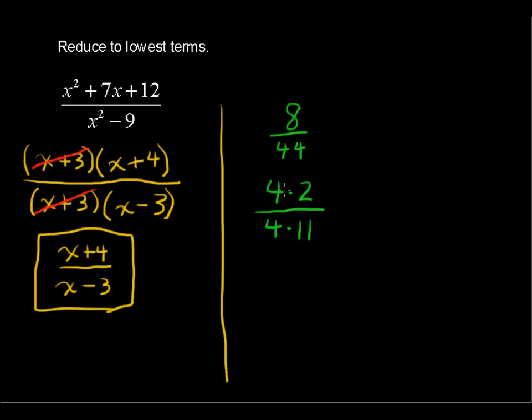So when you have things multiplied in the numerator and the denominator, now you can cancel out these factors. Factors are things that you are multiplying with something else. Cancel out the 4 out of the numerator and the denominator, and what you have left is 2 over 11.